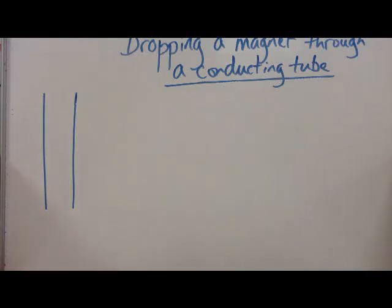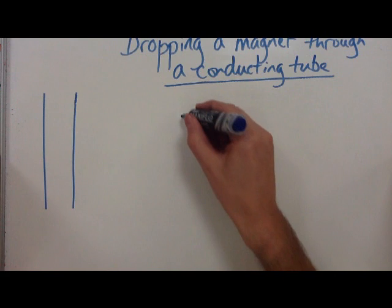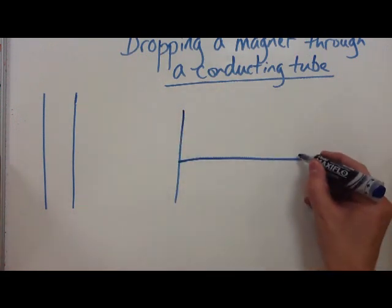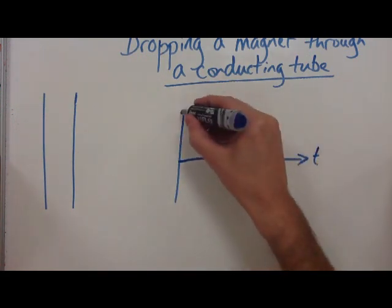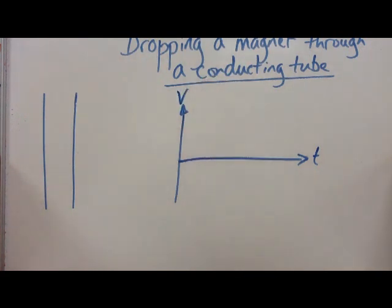Let's look at a classic Faraday's Law, Lenz's Law experiment, whereby we drop a magnet down through a conducting tube, and we want to know what happens to the potential difference in that tube as a result.